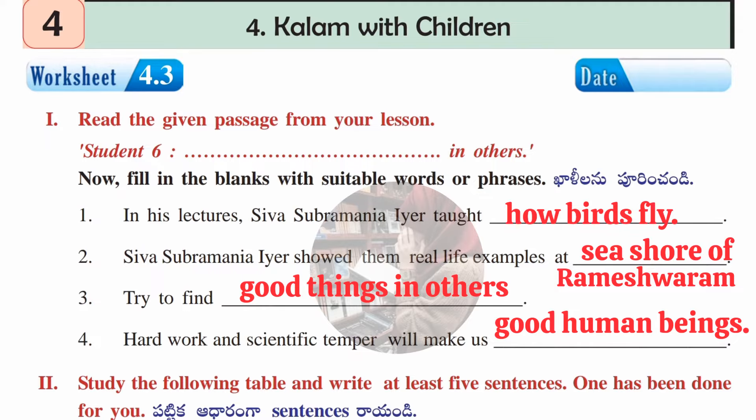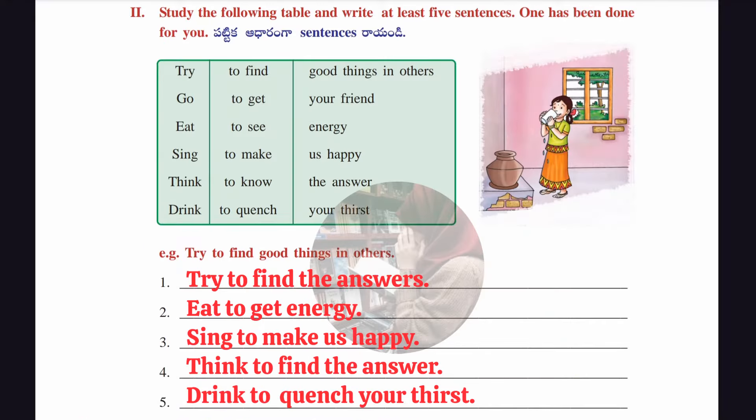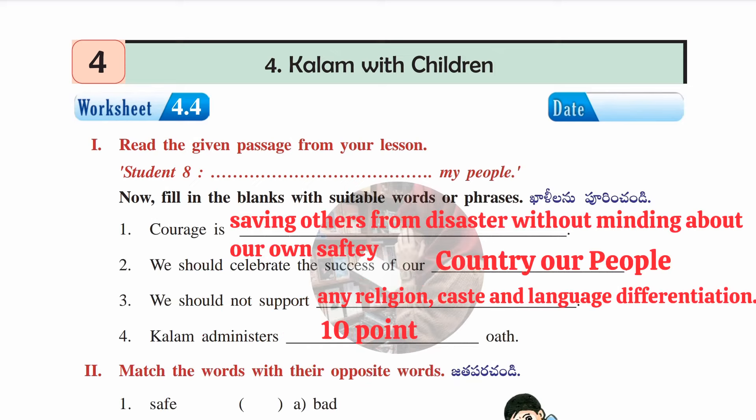The second section of worksheet 4.3: study the following table and write at least five sentences, picking one word from each column. Answers: try to find the answers; eat to get energy; sing to make us happy; think to find the answer; drink to quench your thirst.